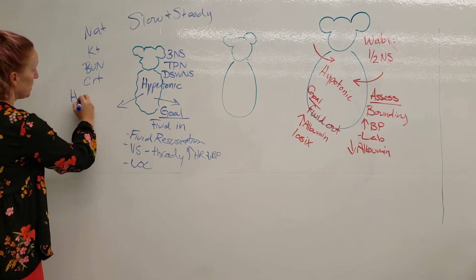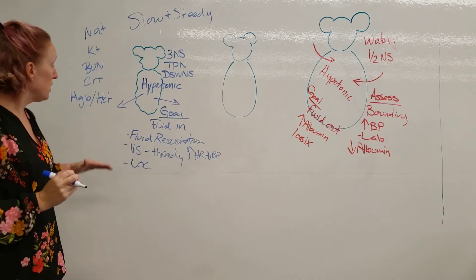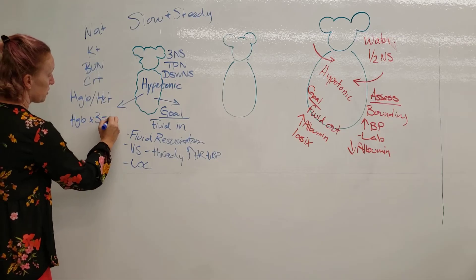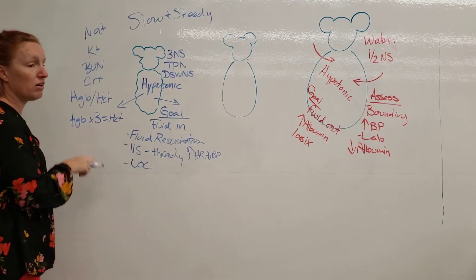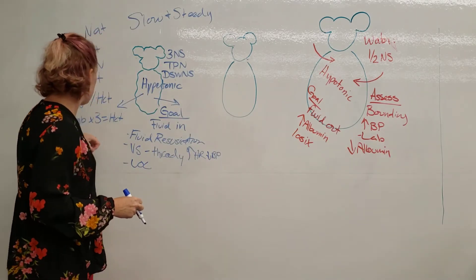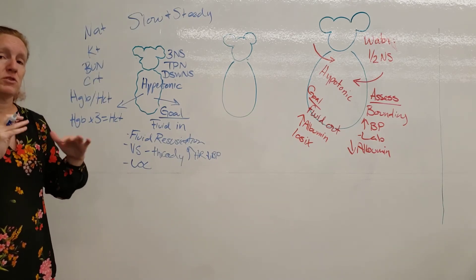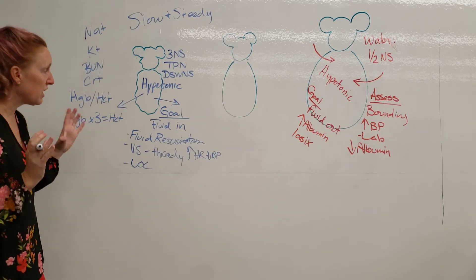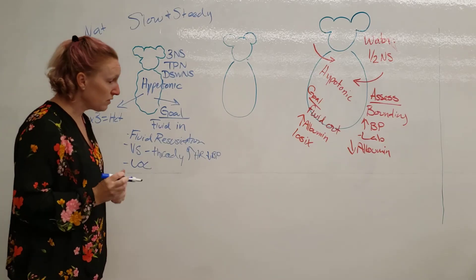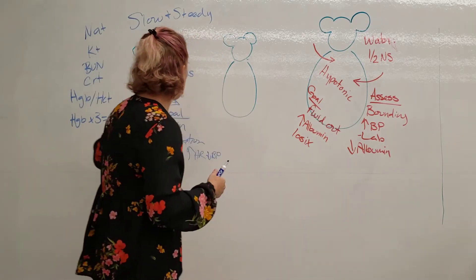Also assess hemoglobin and hematocrit. Hemoglobin times three should equal hematocrit — so a hemoglobin of 8 should give a hematocrit of 24. If you have a hemoglobin of 8 but a hematocrit of 34, we know there are fluid shifts and fluid issues going on. You can use that discrepancy as a leverage point to pay attention to fluid status.